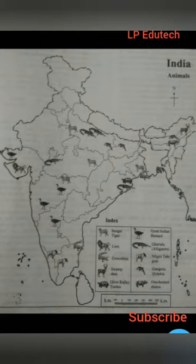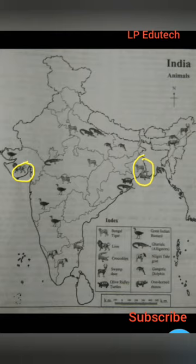The Bengal tiger is mostly found in West Bengal — the name itself indicates where it is found. Lions are found in the Gir National Park in Gujarat. Crocodiles are found in swampy areas, particularly in Madhya Pradesh, Andhra Pradesh, and Uttar Pradesh.